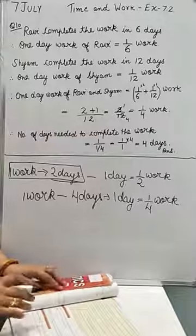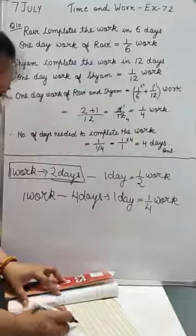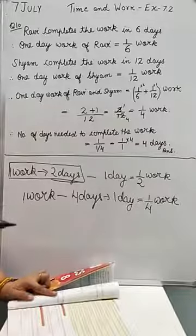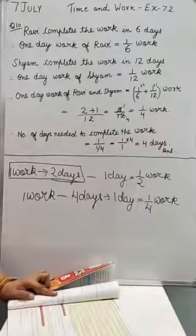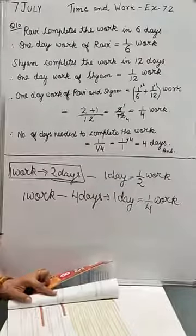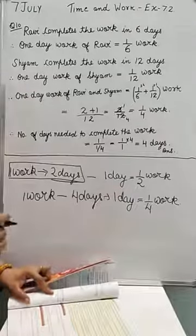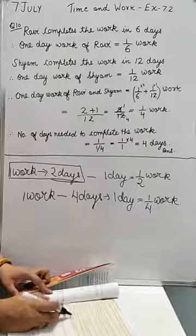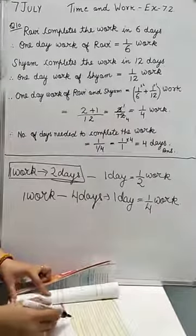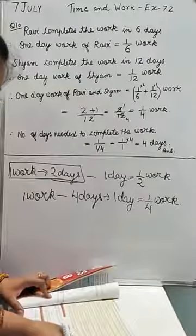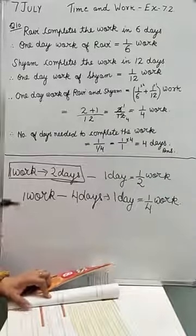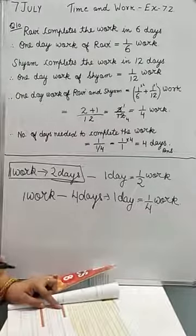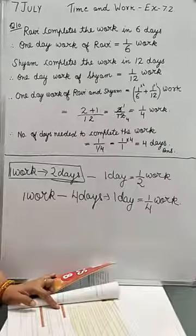Ravi takes 6 days to complete a job. Shyam takes 12 days to complete the same job. You see, class, some people work faster and some slower — just like reading or writing, some finish quickly and some take more time. Each person works according to their own speed. If Ravi and Shyam work together, how many days will they take to complete the job?